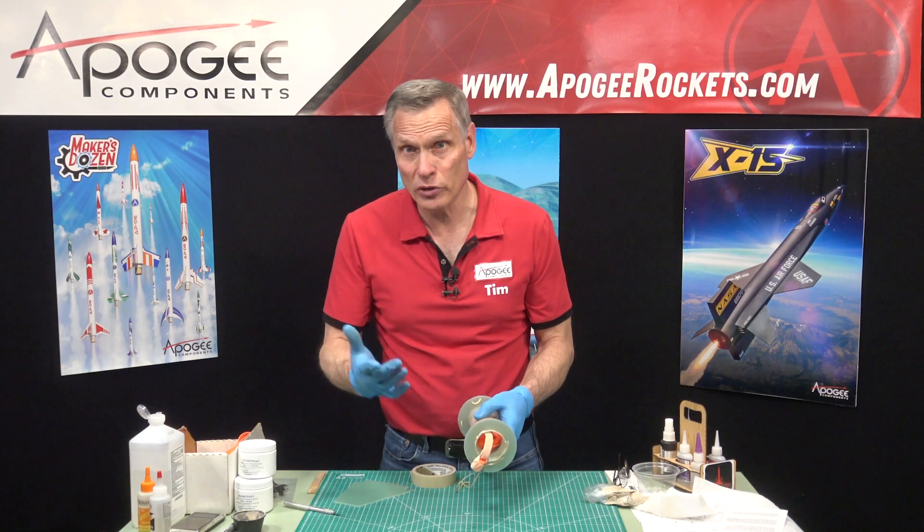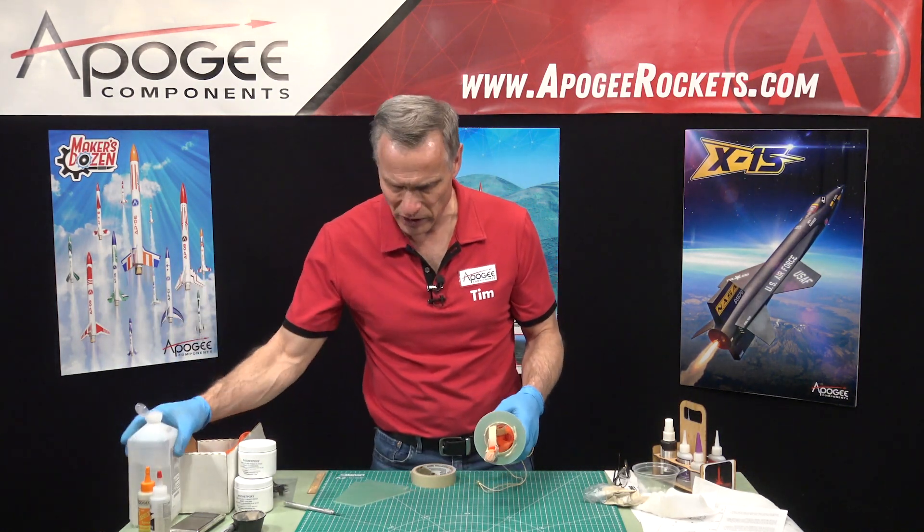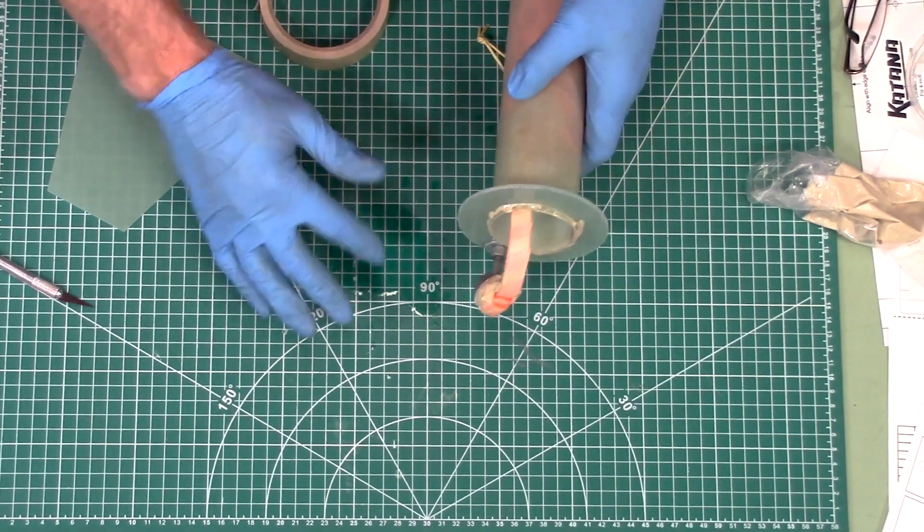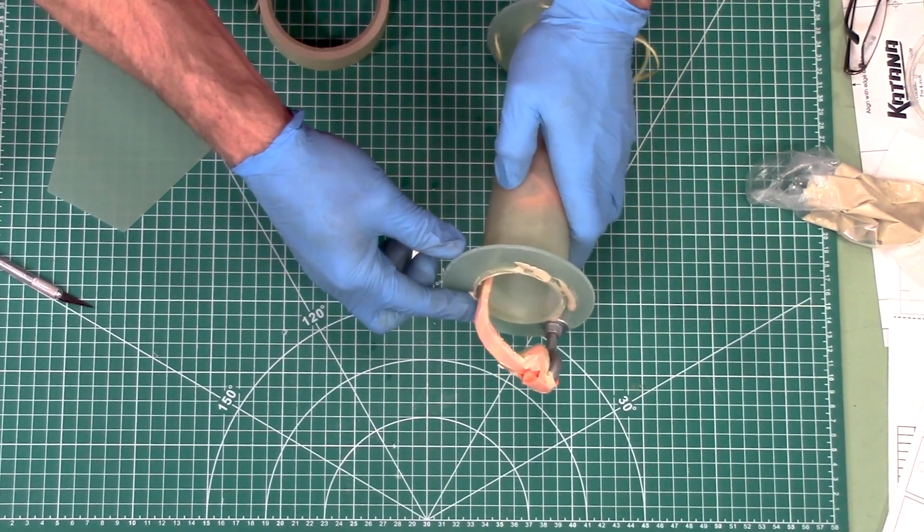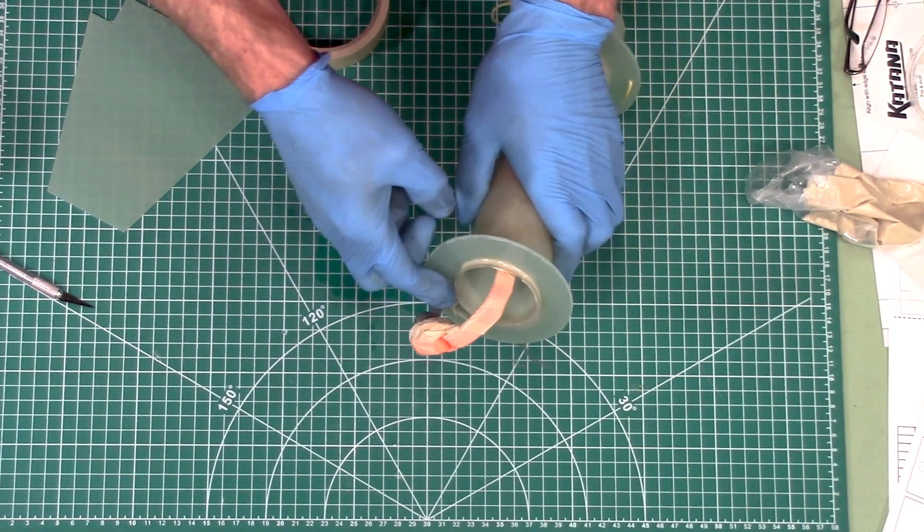If you need to do cleanup, regular rubbing alcohol works just fine. In fact what I'm going to do is I'm going to dip my finger in a little alcohol and then make my fillet. This allows it to slide around.